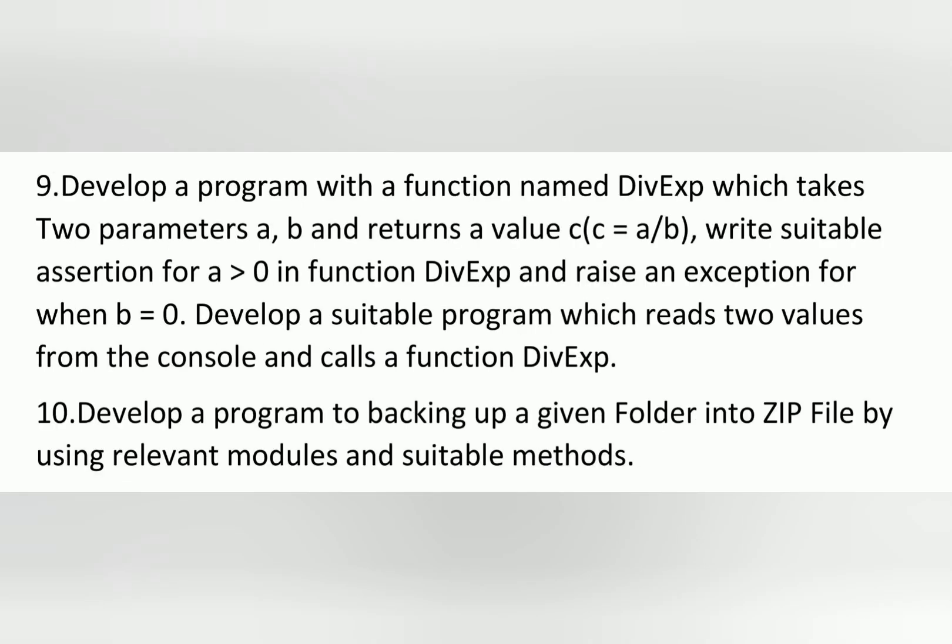The ninth question is: develop a program with a function named divExpress which takes two parameters a and b and returns a value c. Write suitable assertions for a greater than zero in the function divExpress, and raise an exception when b is equal to zero. Develop a program which reads two values from the console and calls the function divExpress.